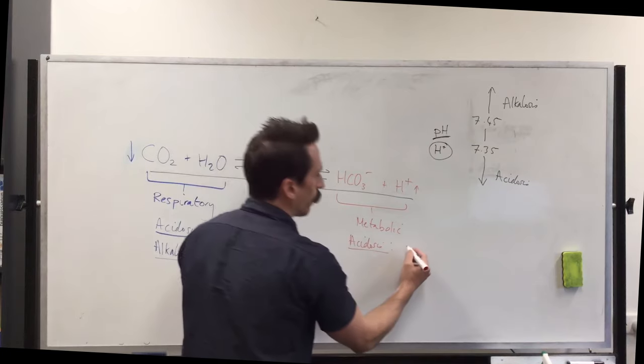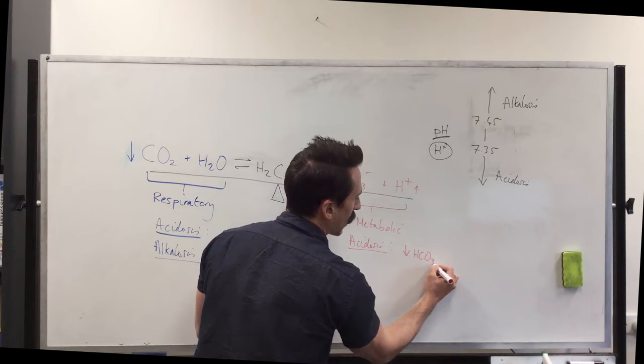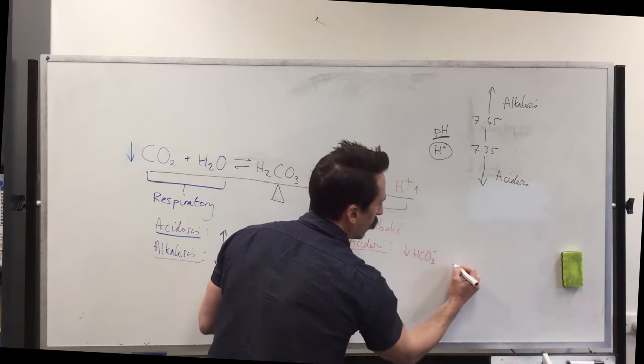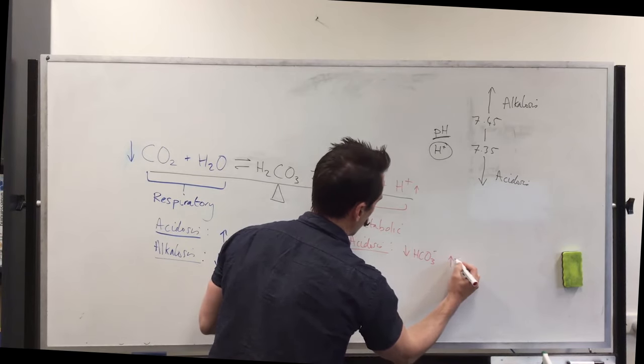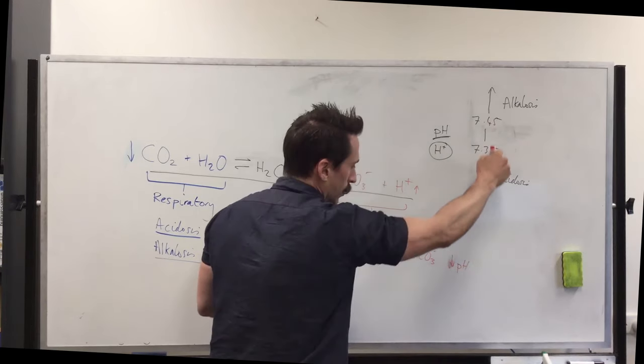So when you do the bloods to check for this, in metabolic acidosis, what you'll find is a drop in bicarbonate. This again is if it's uncompensated and a drop in the pH because it's acidosis. So it's going down.